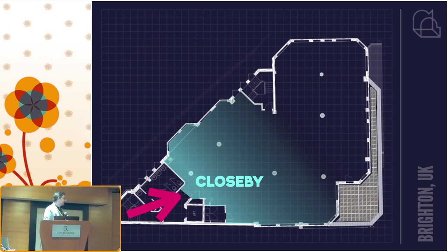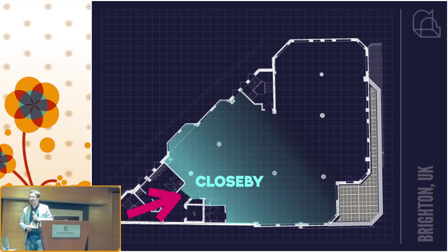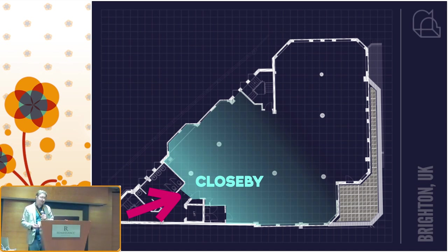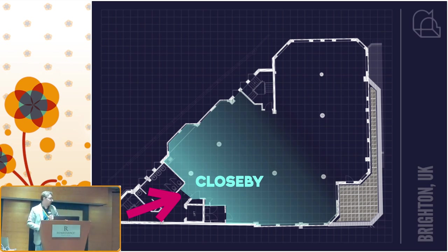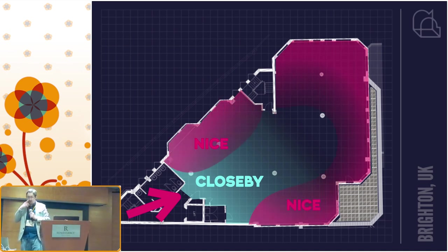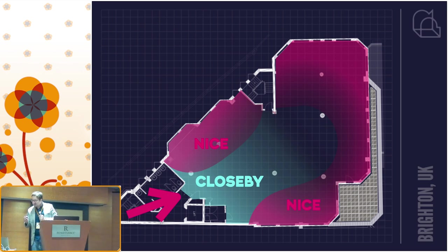The second lens is niceness — nice views out of the window, nice light, nice open space, nice natural features. We want to allocate the nicest areas to where the people are and the least nice areas to storage rooms or corridors. In our facility we're lucky to have light on almost three-quarters of the building and a roof terrace, which is lovely for lunch in the sunshine — although you have to fend off hungry seagulls. We are right by the sea.